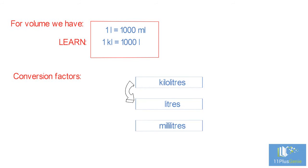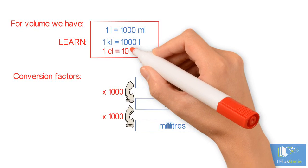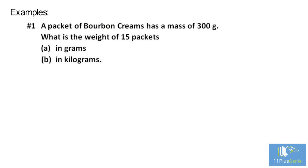For volume, we have: one liter equals 1000 milliliters, one kiloliter equals 1000 liters. To convert kiloliters to liters, we times by 1000. To convert liters to milliliters, times by 1000. The opposite is true: to convert milliliters to liters, divide by 1000. To convert liters to kiloliters, divide by 1000. The centiliter is not used on a daily basis, but it has been asked in the past — you need to remember that one centiliter equals 10 milliliters.